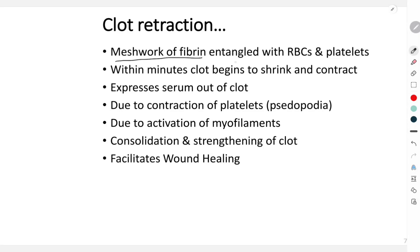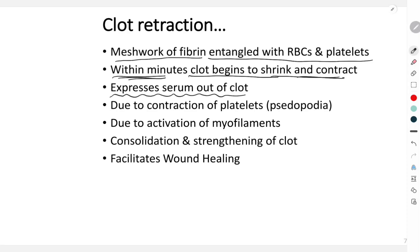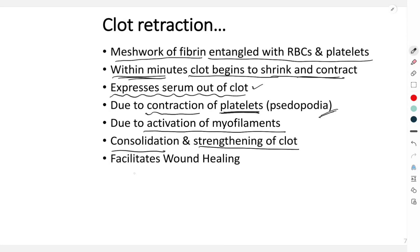The clot is a meshwork of fibrin entangled with RBCs and platelets. Within minutes, the clot begins to shrink and contract — this is clot retraction — which expresses serum out of the clot. Clot retraction is a function of the platelets; it occurs due to contraction caused by pseudopodia on the platelet surface via activation of myofilaments. Clot retraction helps in consolidation and strengthening of the clot, and also facilitates wound healing.